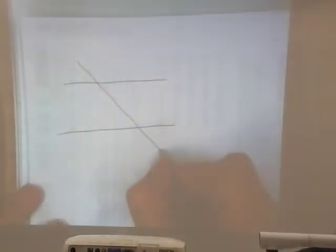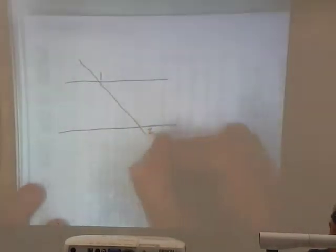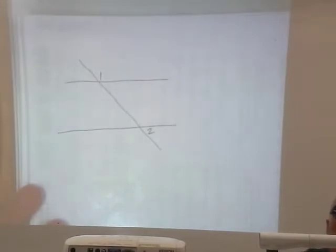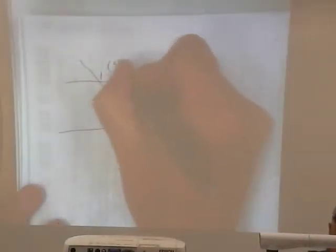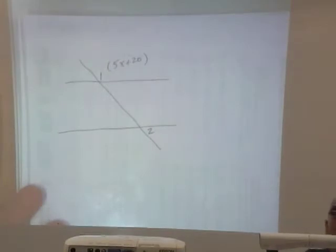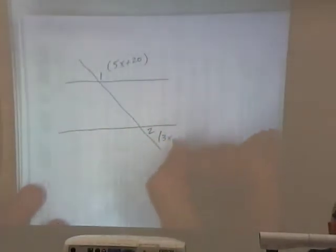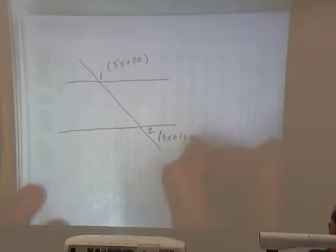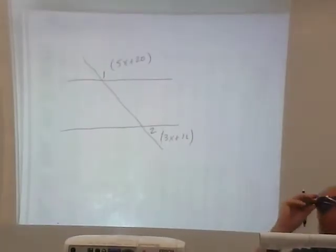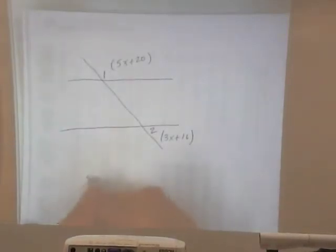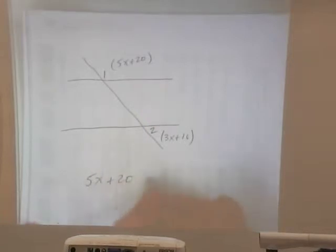Okay. Number 18. Transversal. List a couple angles here. Angle 1 and angle 2. In the diagram above, measure of angle 1 is 5X plus 20. And the measure of angle 2 is 3X plus 16. What do I know about those two angles? They're supplementary. They're supplementary, right? So if we combine them.